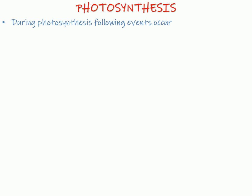Now let us see the stepwise events of photosynthesis that occur in the green plants. The first step is absorption of light energy by chlorophyll. In green plants, chlorophyll A and B pigments help to absorb light. Only red and blue light radiations are absorbed by chlorophyll, and green and yellow being reflected back. That is why the color of leaf appears to be green for us.